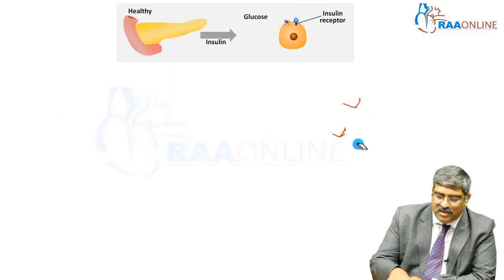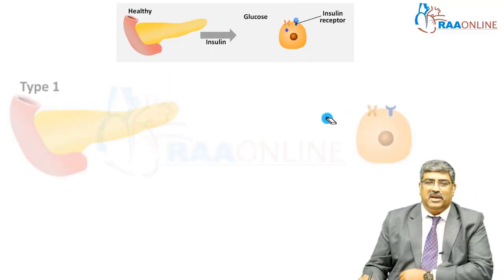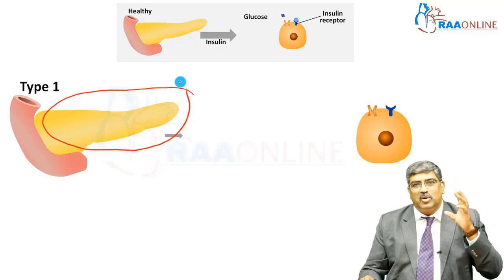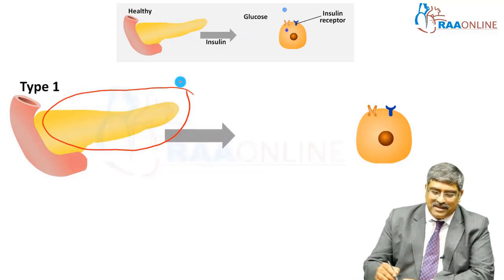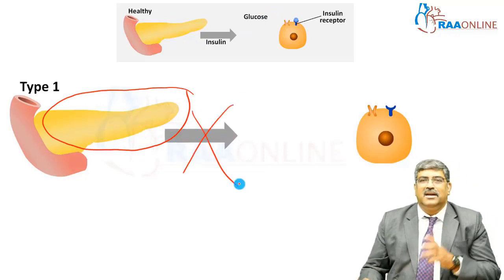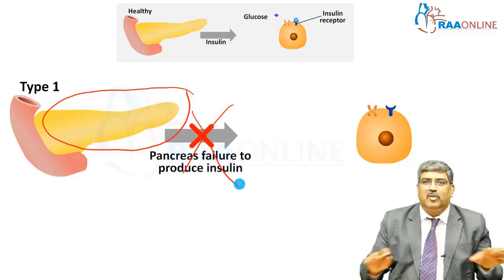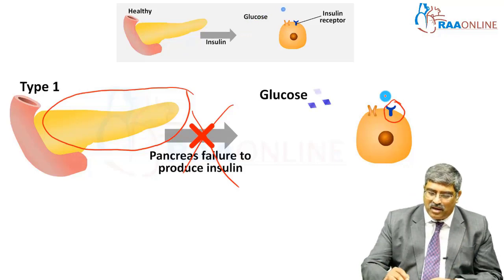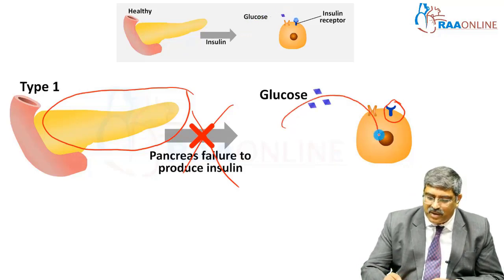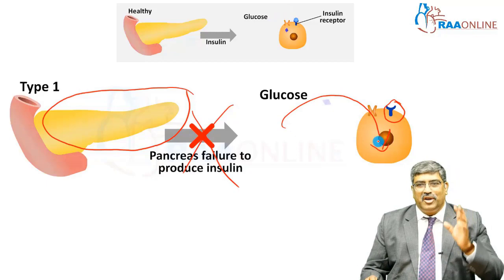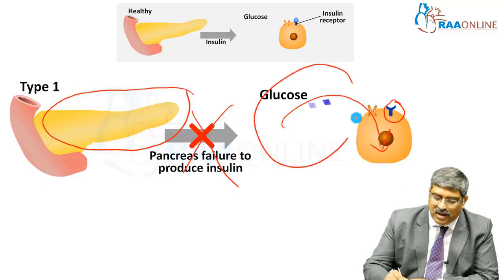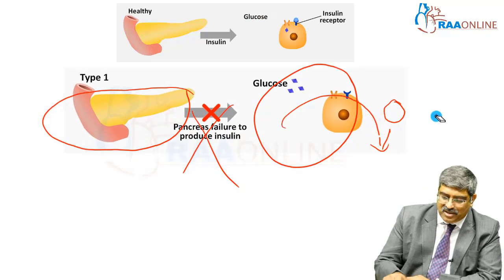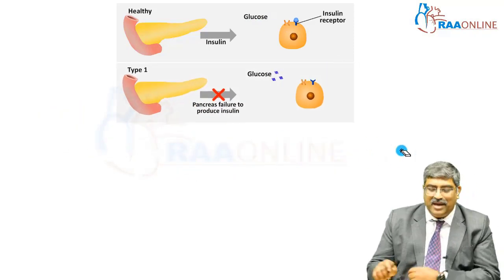Let us see what happens with Type 1 diabetes mellitus. In Type 1, the pancreas does not produce insulin. Since insulin is not produced, there is no action on the insulin receptor and glucose cannot be transported into the cell for utilization. Therefore, hyperglycemia occurs. This is Type 1 diabetes mellitus.